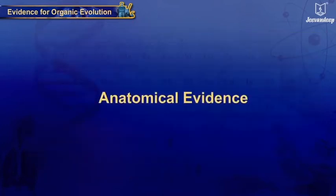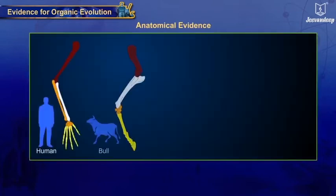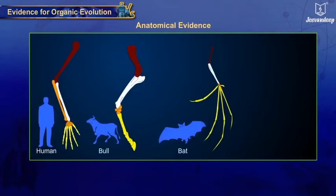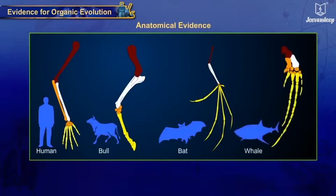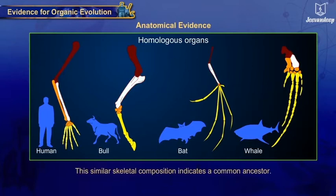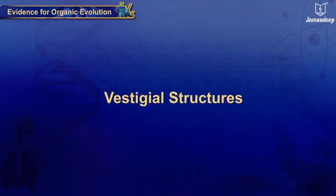Anatomical Evidence: Although the human arm, a bull's leg, a bat's wing and whale's fin perform different functions, there are similarities in the bones and joints present in these organs. These are called homologous organs. This similar skeletal composition indicates a common ancestor.